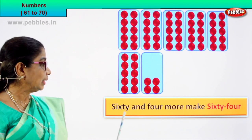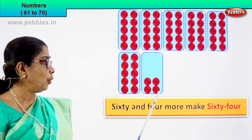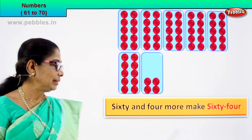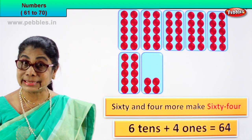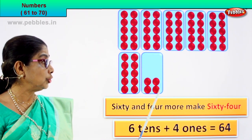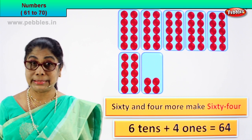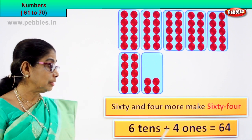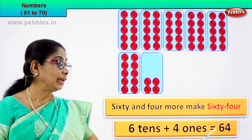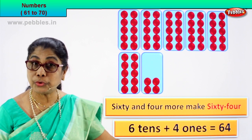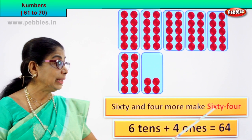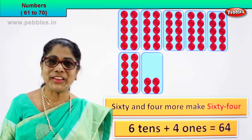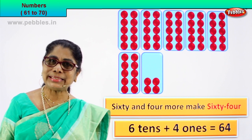That is sixty-four. Sixty is six tens plus one, two, three, four. Six tens plus four ones. Six tens plus four ones equal to sixty-four.